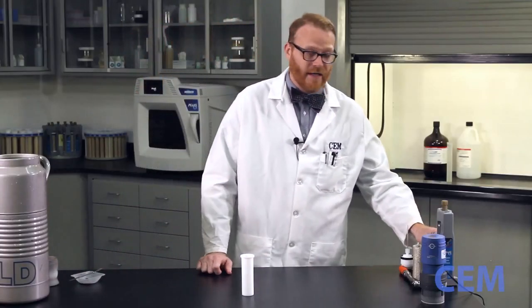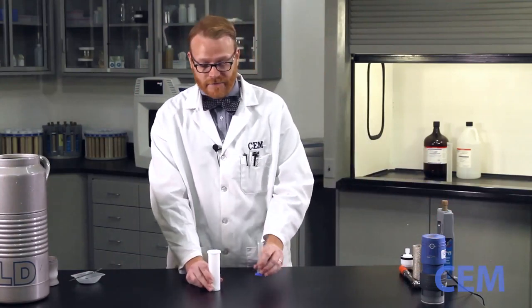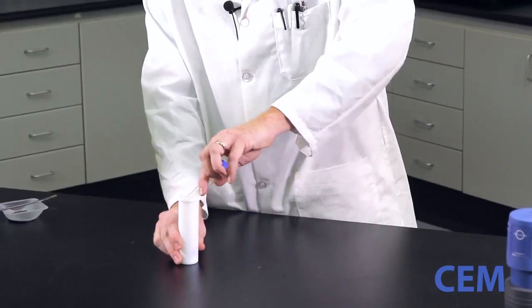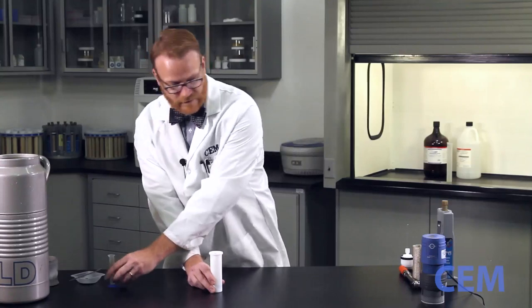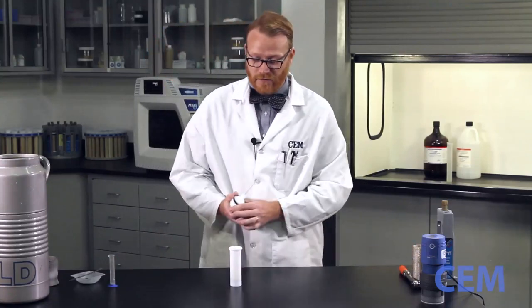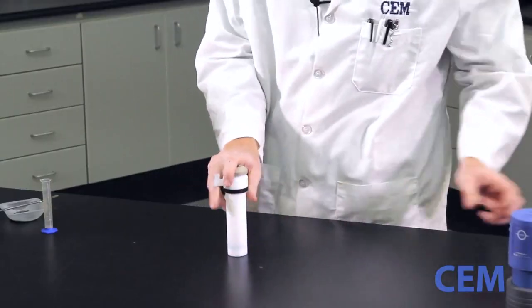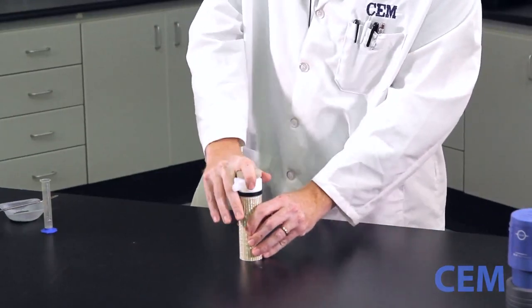We're going to take 10 milliliters of nitric acid. Pour that in. And we're going to use the control vessel here. Assemble it.